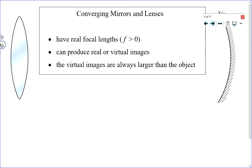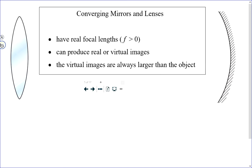I hope that gives you an idea of what we're talking about when we refer to light converging or diverging. The converging lens and the converging mirror have similarities — in fact, everything that is true optically about the lens is true optically about the mirror. Physically there's a huge difference: lenses use refraction, mirrors use reflection. But both converging devices have real focal lengths, which means the focal length F is a positive number when you put it into your formulas.